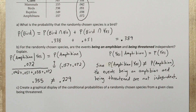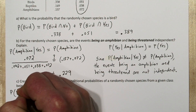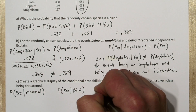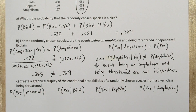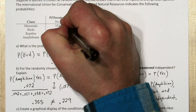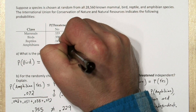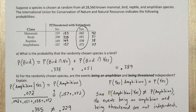For this part, we want to calculate the probability that a randomly selected species from each class of animals is threatened with extinction — so the probability a randomly selected mammal is threatened, a randomly selected bird is threatened, and the same for reptiles and amphibians. One way to think about this is to pretend there are exactly 1,000 species. Multiplying by the probabilities, that means there are exactly 153 mammals not threatened and 42 that are, and 389 birds total.